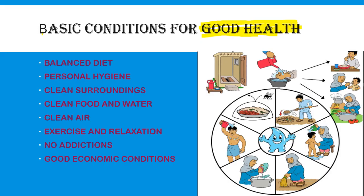So what conditions should be there? First one is balanced diet. There should be a balanced diet. It should include carbohydrates. There should be proteins — carbohydrates content and proteins both should be in your diet.